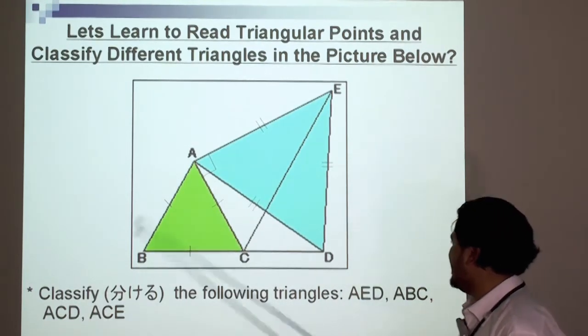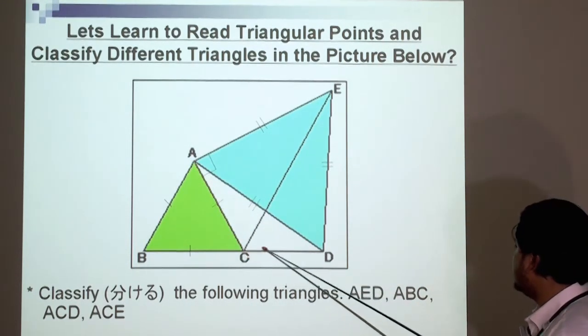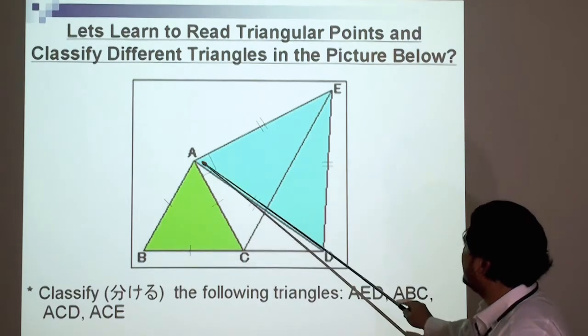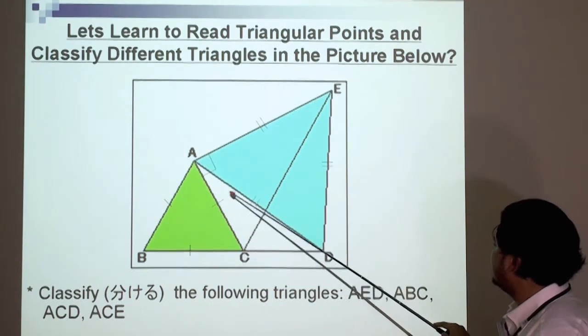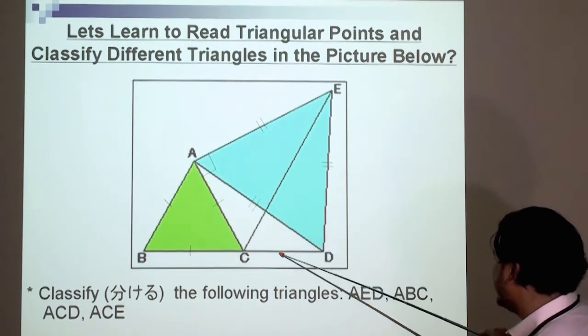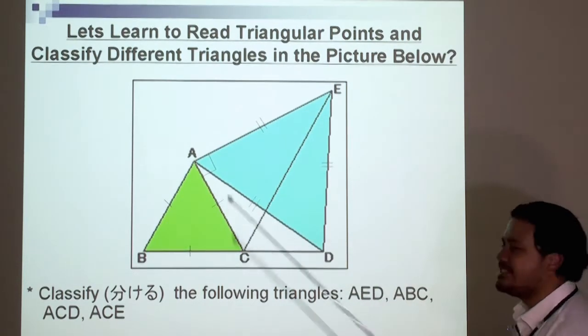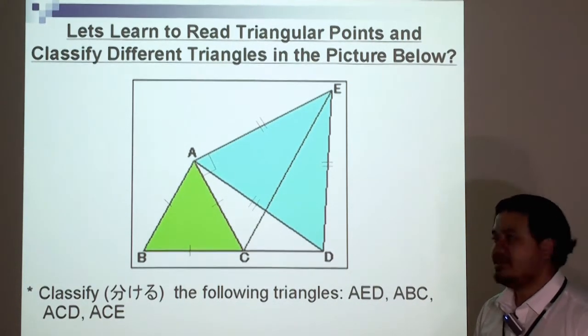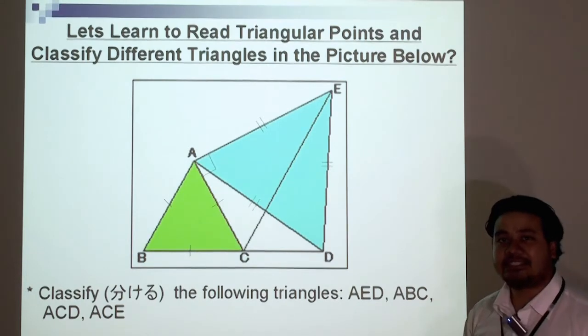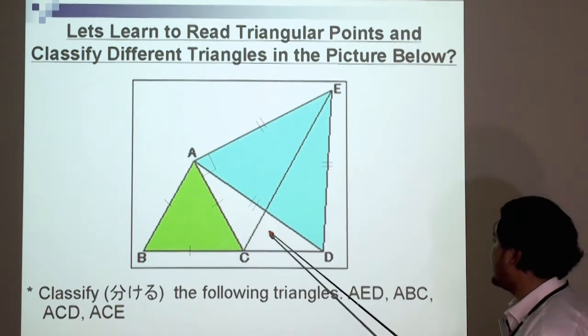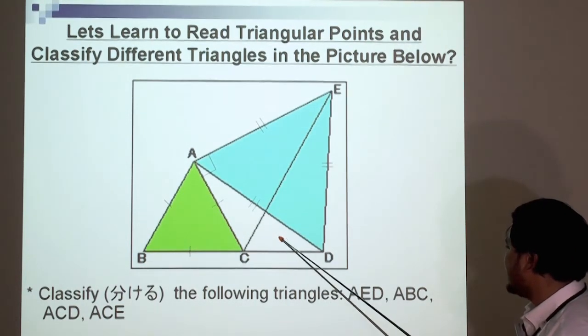The next triangle, A, C, D. That side is different from that side. Looks kind of different from here. So if none of the sides are the same, it's a scalene, a scalene triangle. Triangle A, C, D is a scalene triangle.